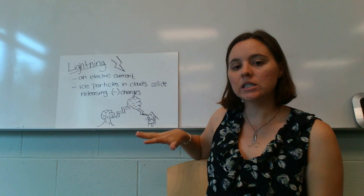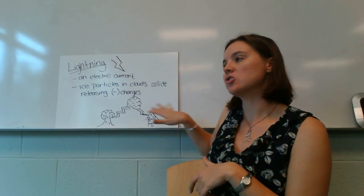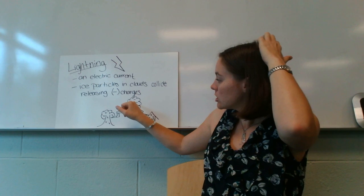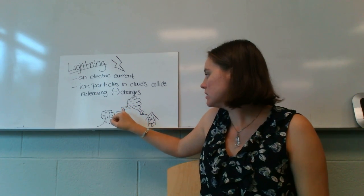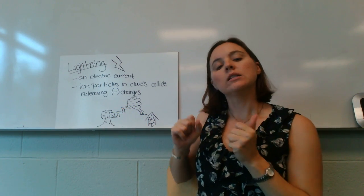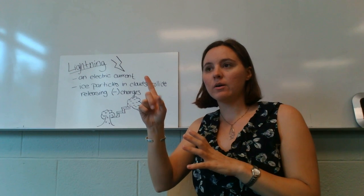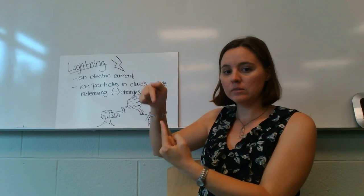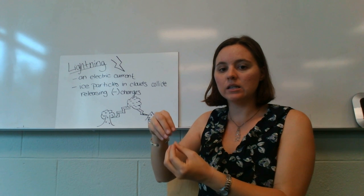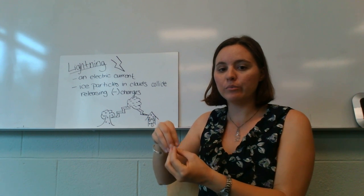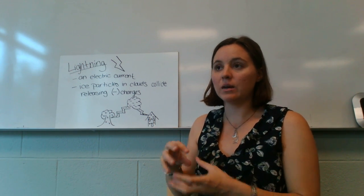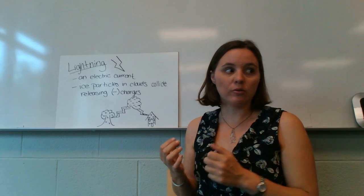There are tons and tons of positive charges on Earth's surface — trees are positively charged, the ground is positively charged, our houses are positively charged. So those negative charges are going to start jumping down out of the clouds, and the positive charges are going to jump up to meet them. When those electrons and protons — the positive charges — meet each other, that's when we get that big flash of lightning and that big loud crack.